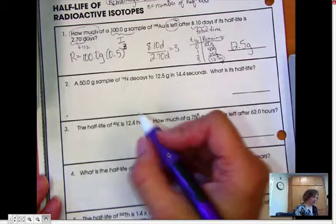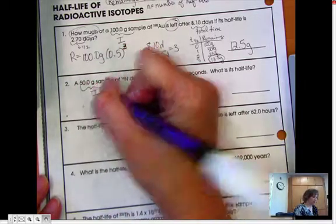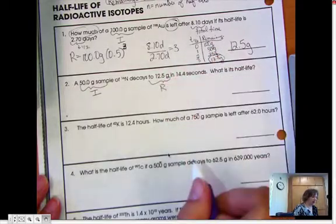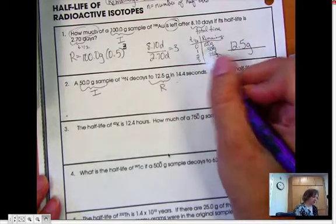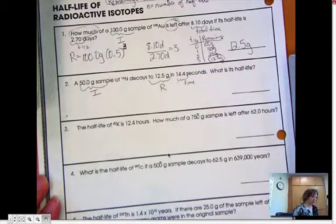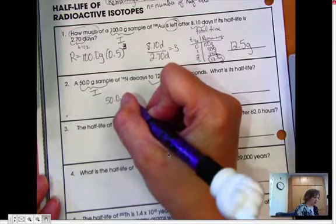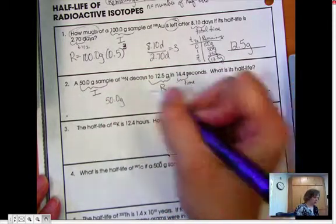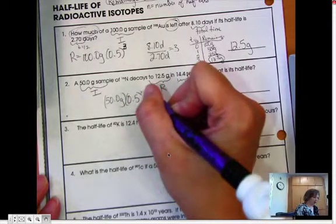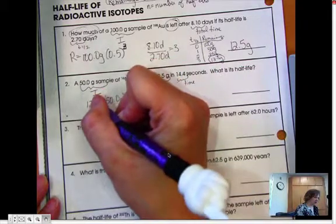A 50-gram sample of nitrogen-16 decays to 12.5 grams in 14.4 seconds. What is its half-life? This time we're starting with the 50-gram sample as our initial amount. It decays to 12.5 grams, so that's remaining. And the amount of time that's gone by is 14.4 seconds.